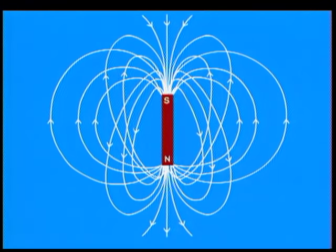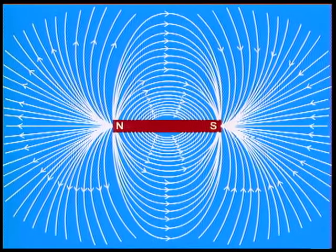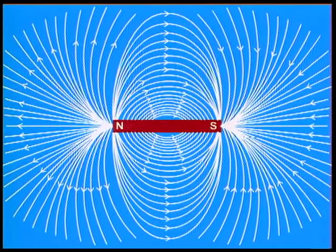Remember that the magnetic field lines of a magnet are not confined to a plane, but are in a region all around the magnet. We can observe that the field lines emerge from the north pole of a magnet and merge at the south pole.